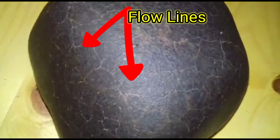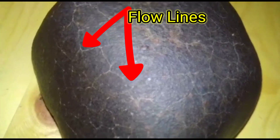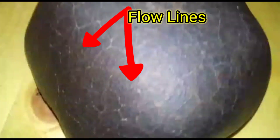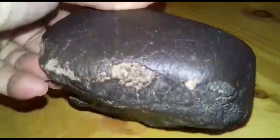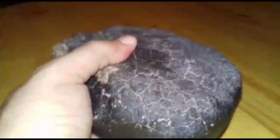Flow Lines: As a meteorite burns through the atmosphere, its surface may melt and flow in tiny rivulets known as flow lines. These patterns formed by flow lines can be minute, often thinner than a strand of human hair, and they are one of the most unique and intriguing surface characteristics of meteorites.